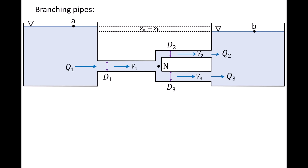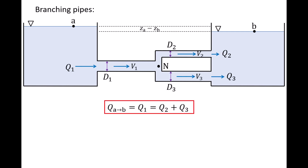The last system we'll examine has pipes that branch or split at a node N. We'll keep the same reservoirs A and B but connect them with a different set of pipes. Reservoir A is connected to pipe 1, and the entire flow Q1 must travel through this pipe to node N. At the node, the flow can travel through pipe 2 or pipe 3 to enter reservoir B. So QAB equals Q1, which also equals Q2 plus Q3. Isolating the node with a control volume, water flows into the control volume from pipe 1 and out through pipe 2 and pipe 3 — one inlet and two outlets.